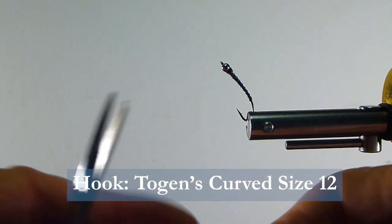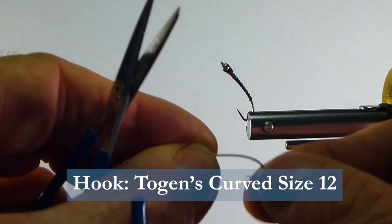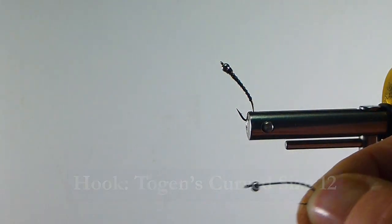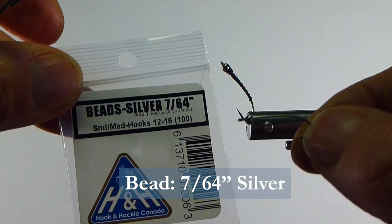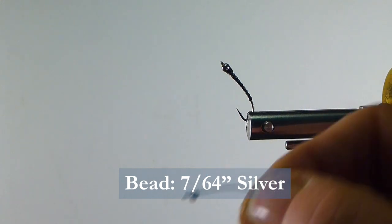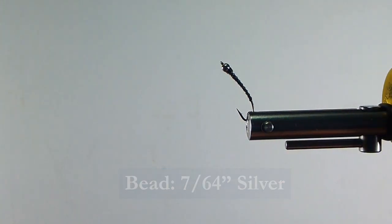So the hook I'm going to be using, this is a size 12 continuous curve hook. And I've put a 764 silver bead on this. That seems to work quite well.